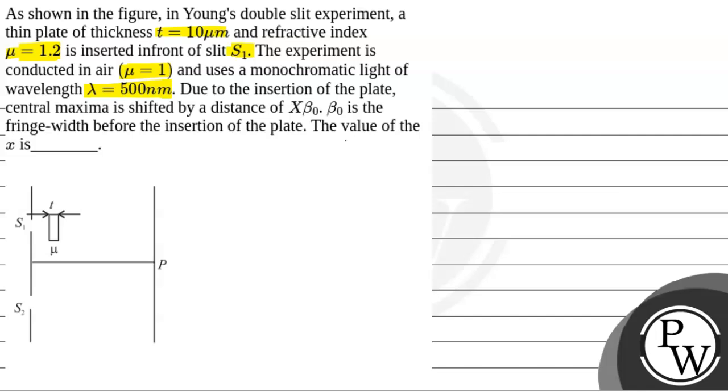Due to the insertion of the plate, central maxima is shifted by a distance of x beta naught. Beta naught is the fringe width before the insertion of the plate. The value of x will be?